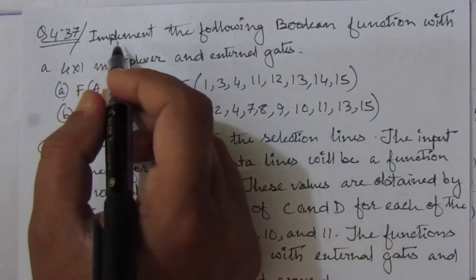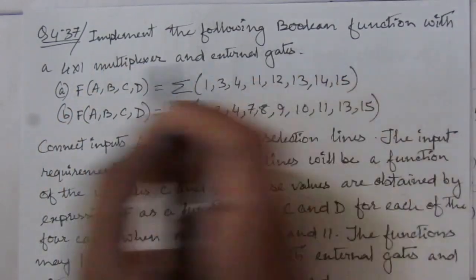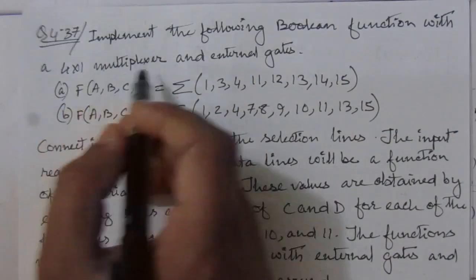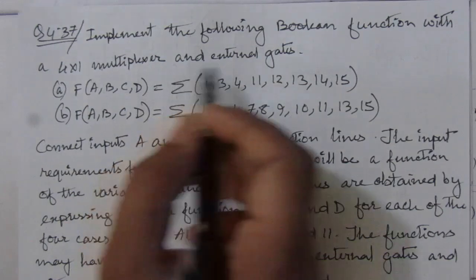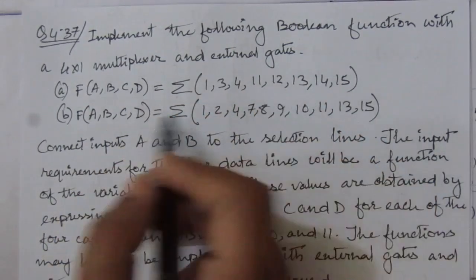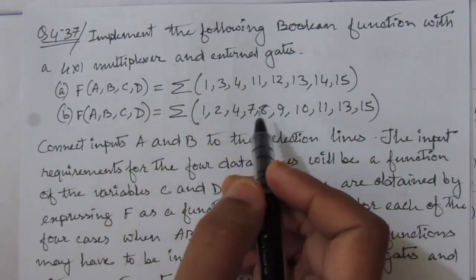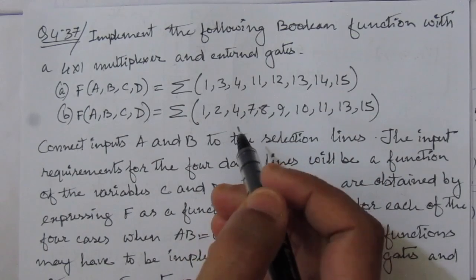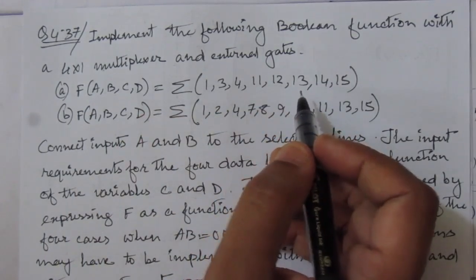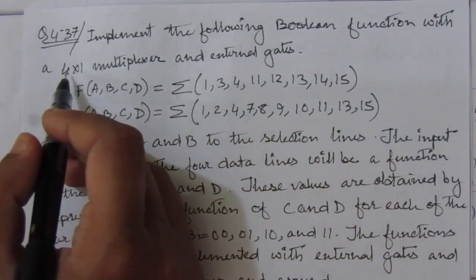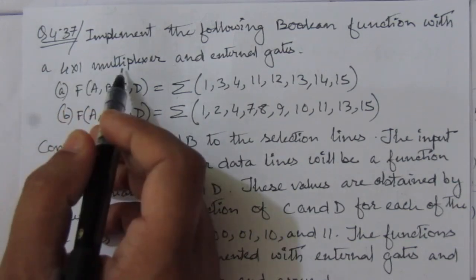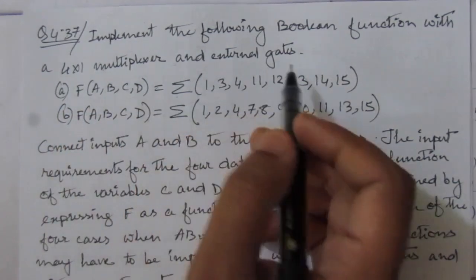The problem is: implement the following boolean functions with a 4-to-1 multiplexer and external gates. That means we are given two boolean functions in sum of minterms expression and we have to realize these functions using a single 4-to-1 multiplexer and external gates.